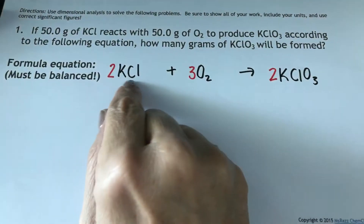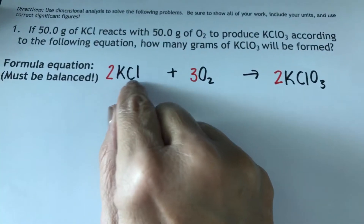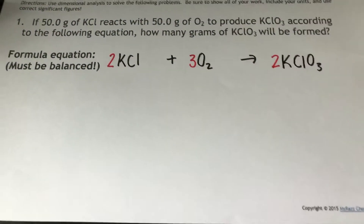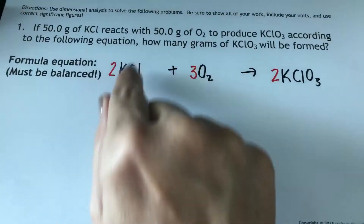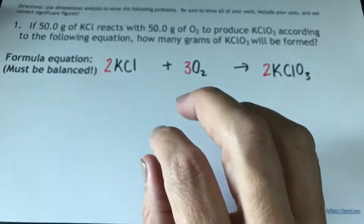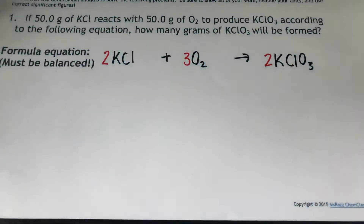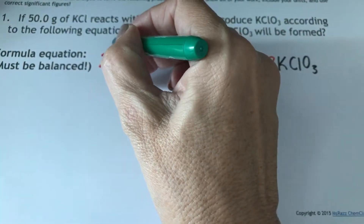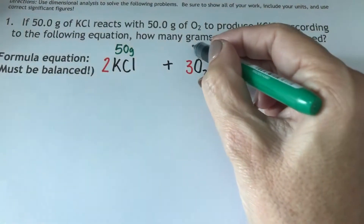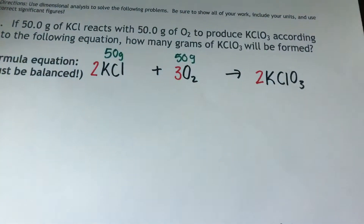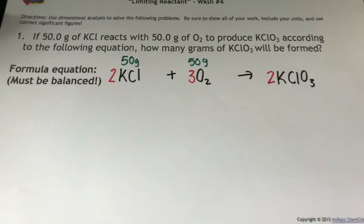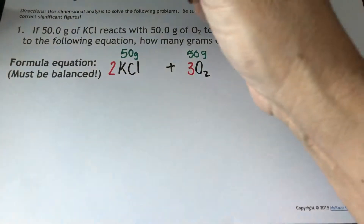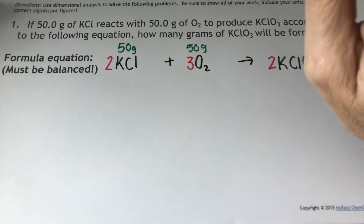If you want to know the mass of potassium chloride, you will take those particles, add them together, and multiply them by two because you know there are two moles — that will give you the mass. We've been told that you're going to walk into the lab and I'm going to give you 50 grams of potassium chlorate and 50 grams of oxygen. I need to figure out which one of these is going to be used up first — which one is going to be too much, or which one is going to be too little.